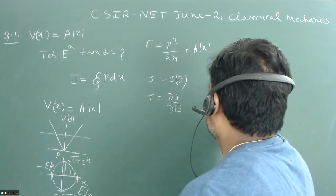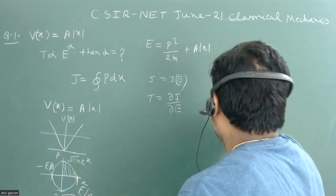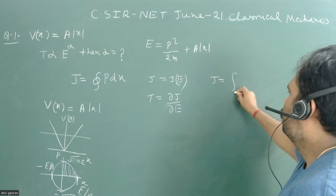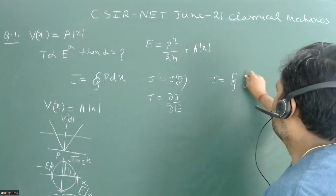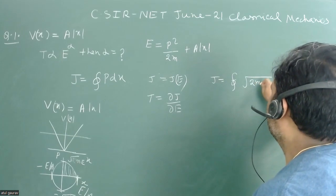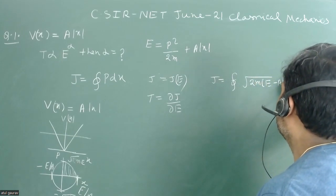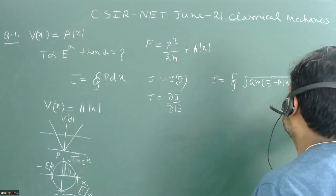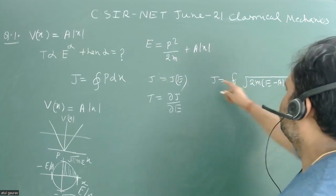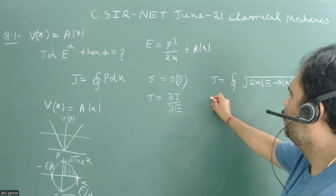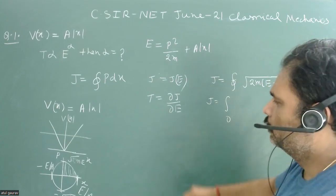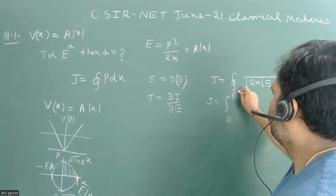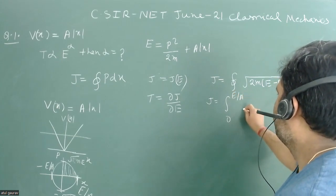So what is my J? My J is equal to integral, and this is complete curve, that is p equals root under 2m(E minus a mod x) into dx. So this is our J. When we open it, then this value is equal to we can go for 0 to E upon a and root under 2m(E minus ax).